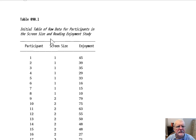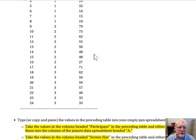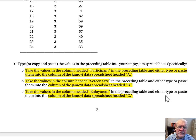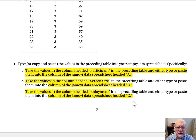The initial table of raw data for participants in the Screen Size and Reading Enjoyment Study has three columns: one headed Participant, one headed Screen Size, and one headed Enjoyment. To enter the data, take the values in the Participant column and type or paste them into column A of the JMOVI spreadsheet. Take the values in the Screen Size column and type or paste them into column B. Take the values in the Enjoyment column and put them into column C.